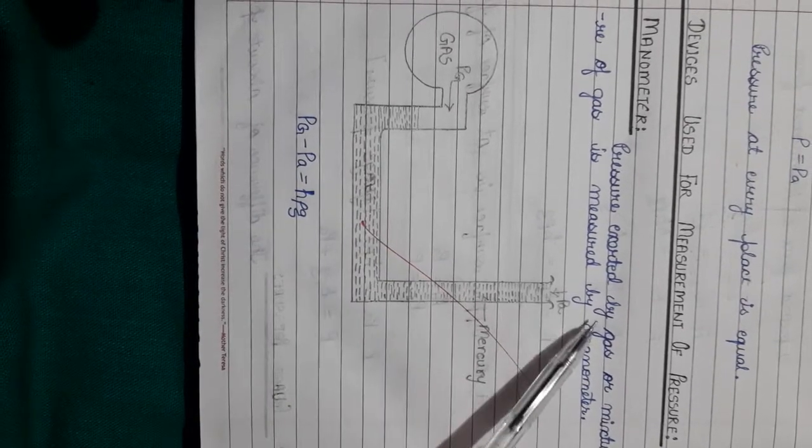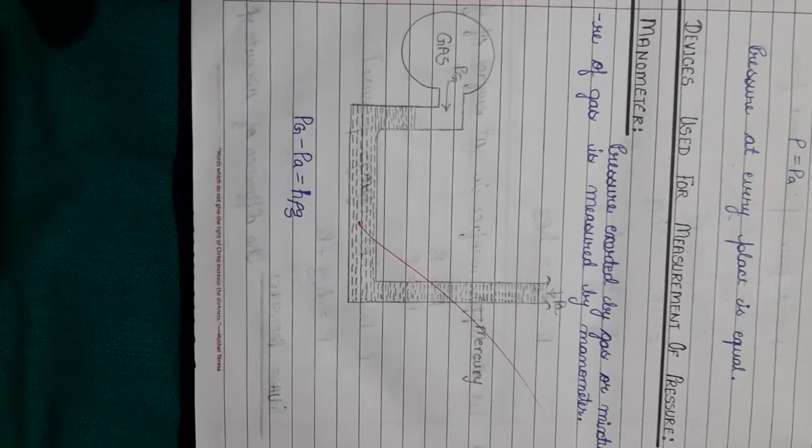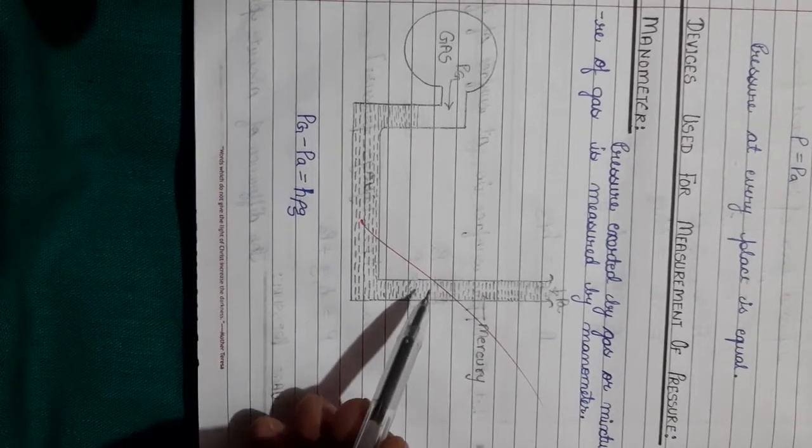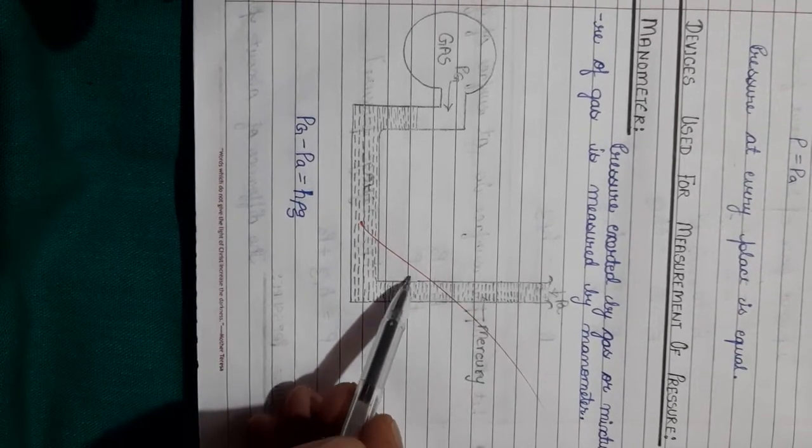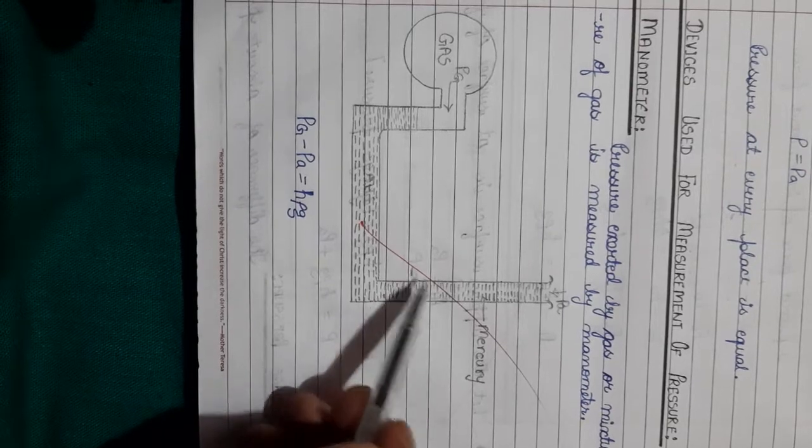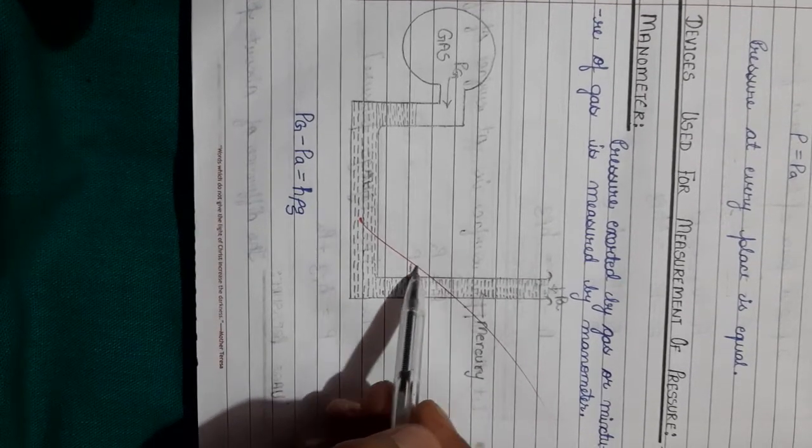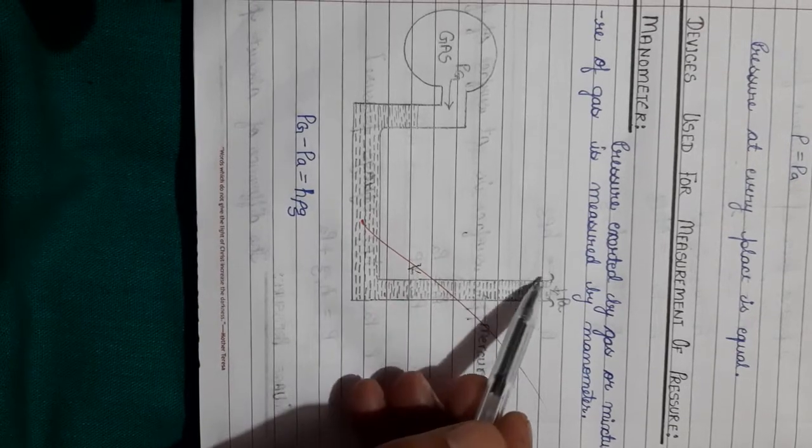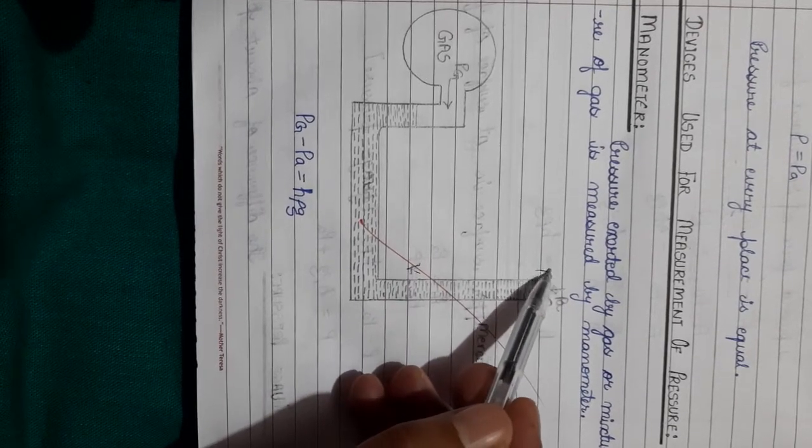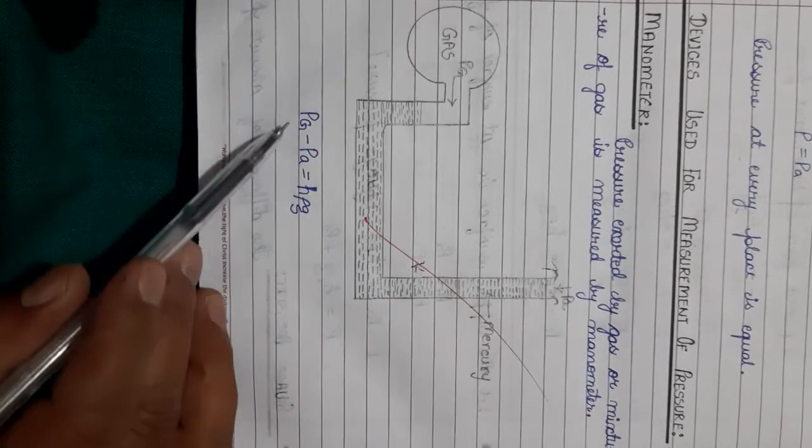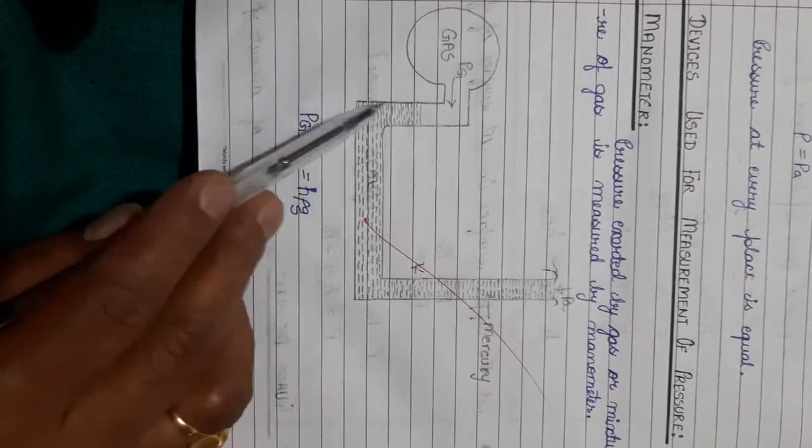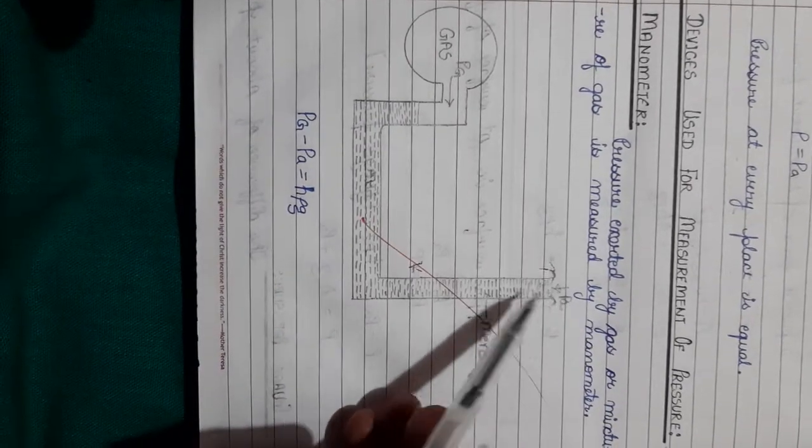What is h × ρ × g? That is the height of the liquid column. This is the pressure difference. So Pg, pressure exerted by this gas, minus pressure exerted by the atmosphere, represents this height.